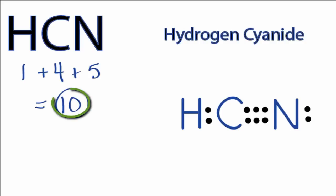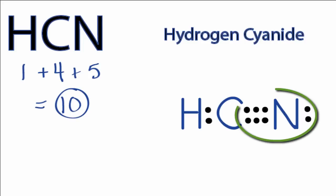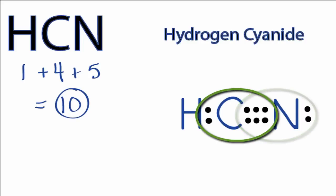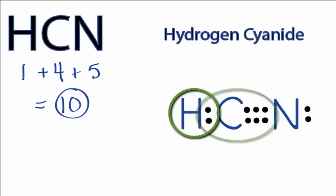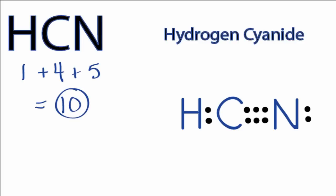We're still using ten valence electrons for the HCN Lewis structure, but now nitrogen has an octet with eight valence electrons, and carbon also has eight valence electrons. Hydrogen has only two, but that's all it needs for a full outer shell. So that's the Lewis structure for HCN.